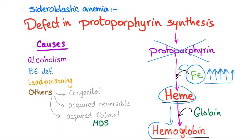What are the causes? Alcoholism is a major cause of sideroblastic anemia — alcoholism is a toxin to the mitochondrion. What else? B6 deficiency — I've explained why in my video on heme synthesis. Lead poisoning — go ahead and watch my video on heme synthesis for that explanation.